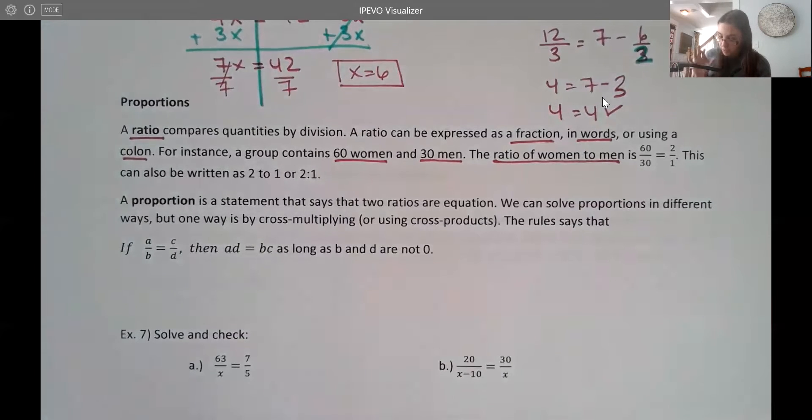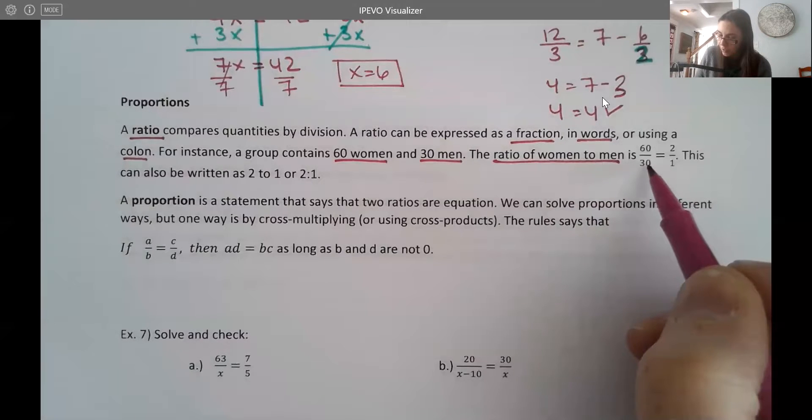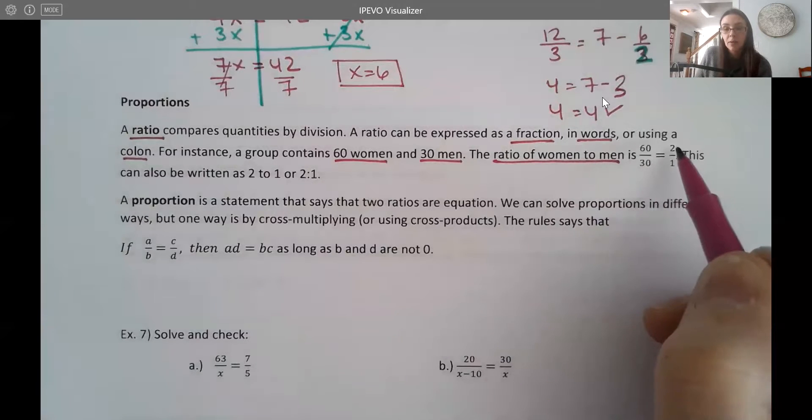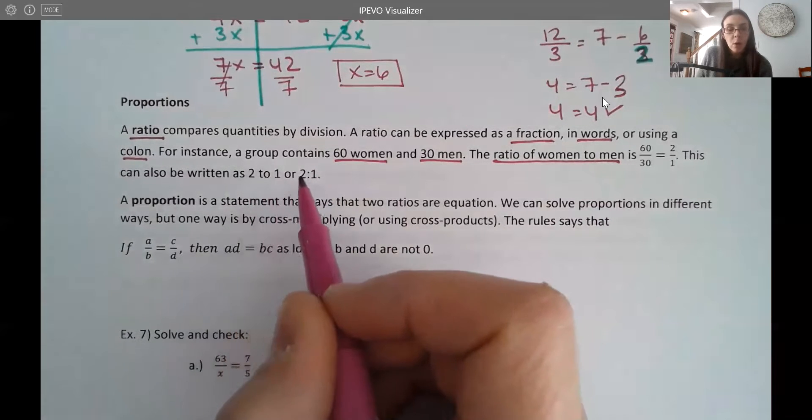The ratio of women to men, we could write as a couple of different ways. As a fraction, we would write this as 60 to 30, and you do want to simplify. So that would be 2 to 1. If you want to write it in words, we write it as 2 to 1, or using the colon 2:1 this way.